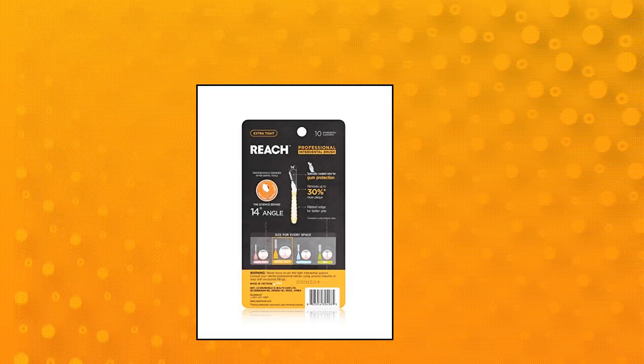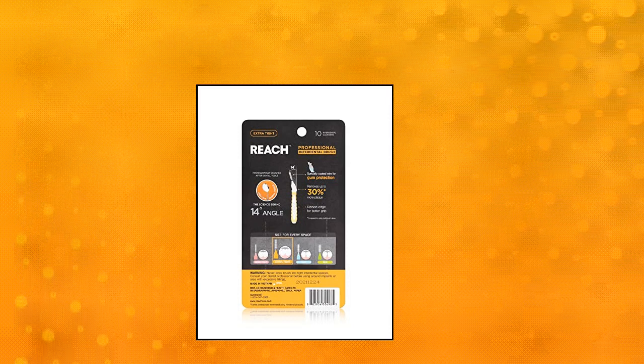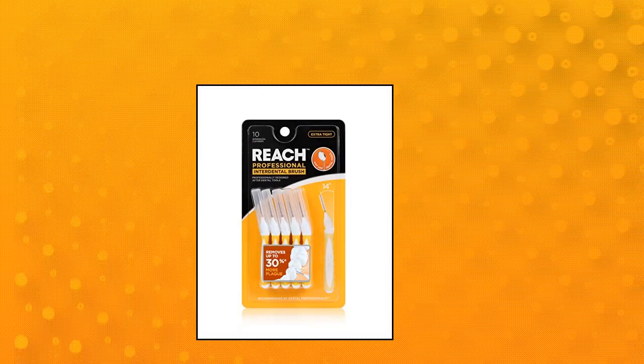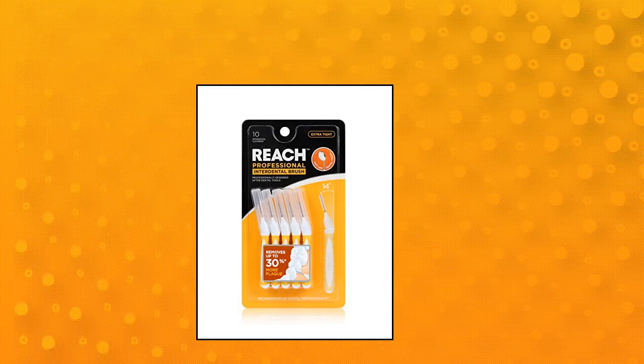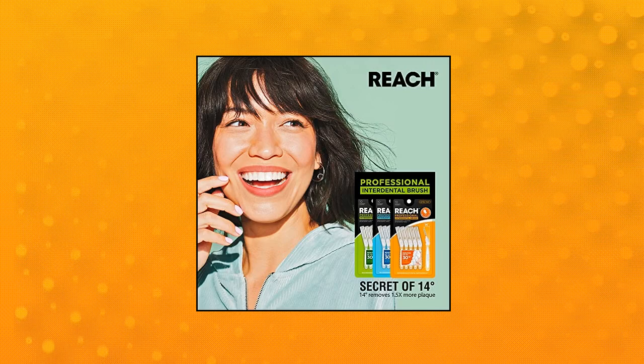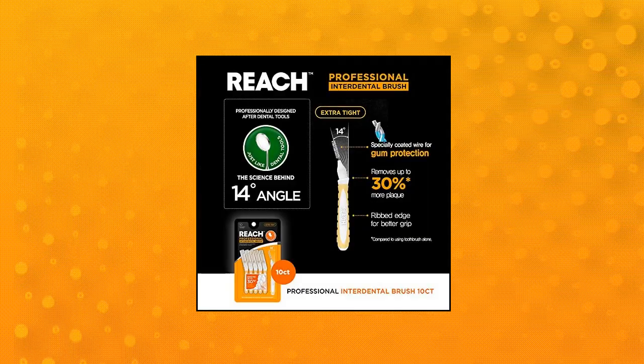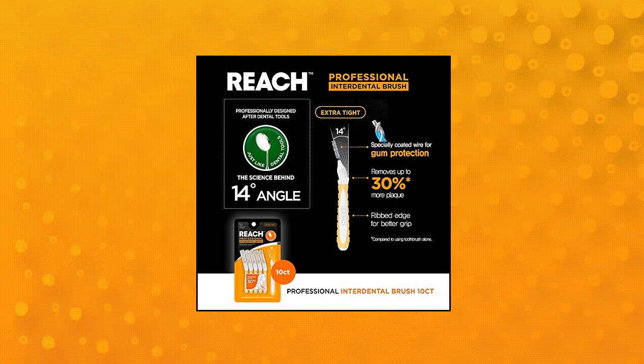Reach interdental brush extra tight 0.7 millimeters removes up to 30% more plaque. Special design for gum protection, effective plaque removal. The optimal angle of 14 degrees is inspired from dental instruments. Angled brushes provide 75% more coverage and cleans 1.5 times more plaque within the same movement. Easier brush motion: the 14 degree angle helps to remove plaque from hard to reach places in a very effective way. 14 degrees eases brushing motion as less movement is needed to reach upper and lower incisors as well as molars.